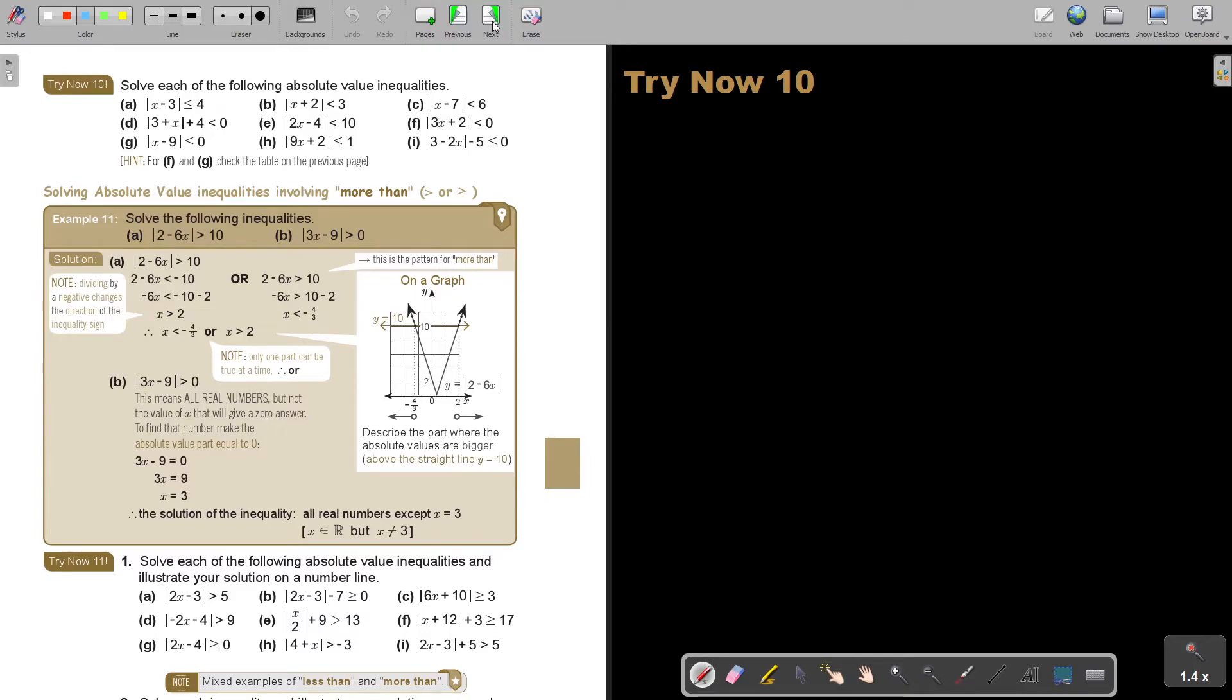I'm just going to give you one. I think F and G, check the table on the previous page. F and G. I want you to stop the video. And I want you to do for me, I said one, but I think I'm going to go for two. Number D as well as number E. Again, you can continue the video as soon as you are finished.